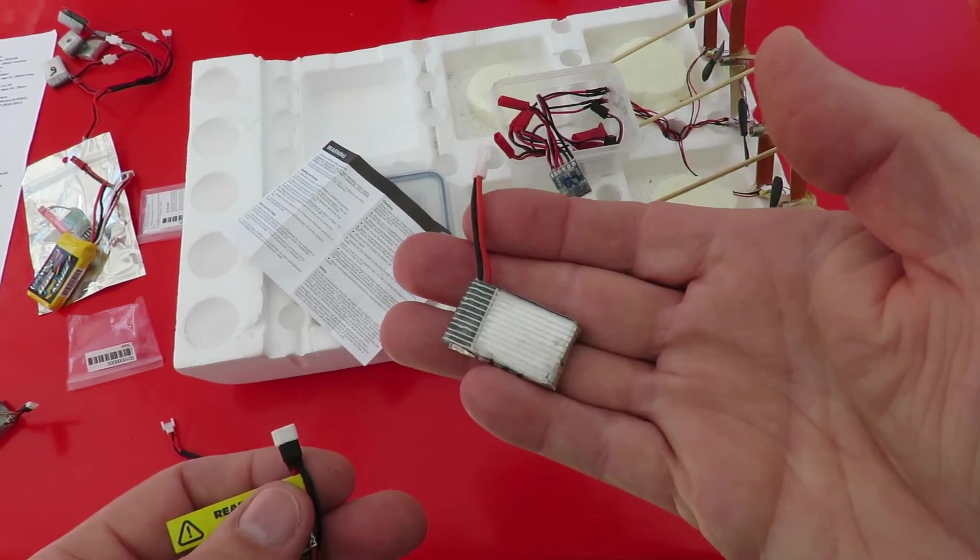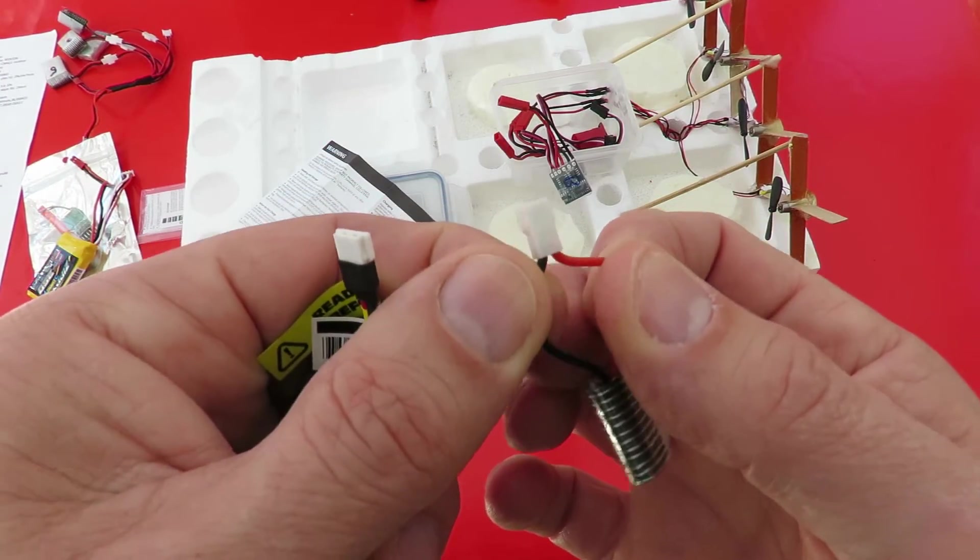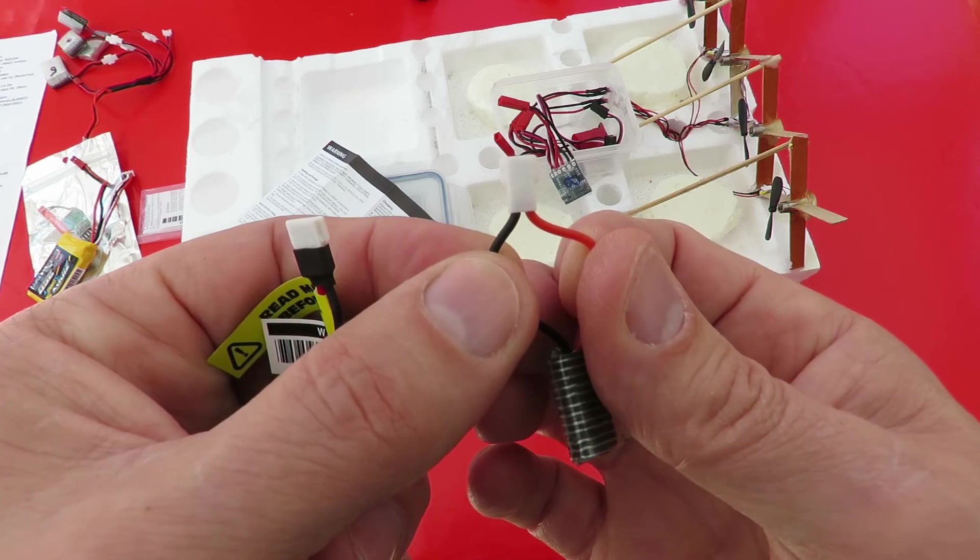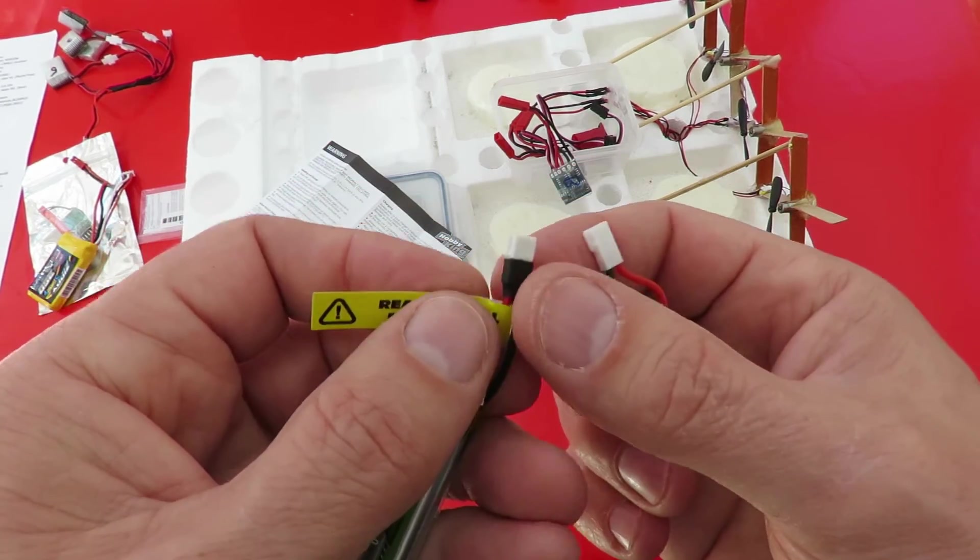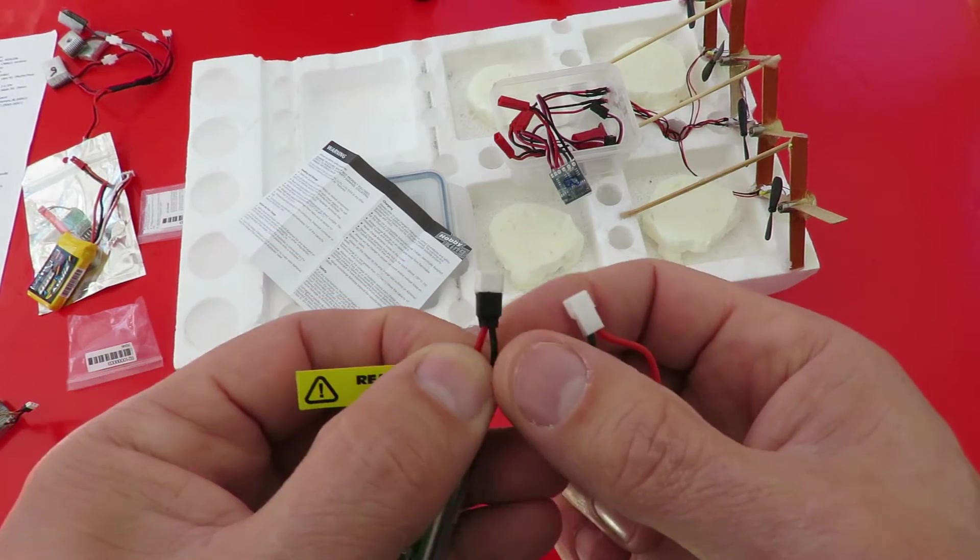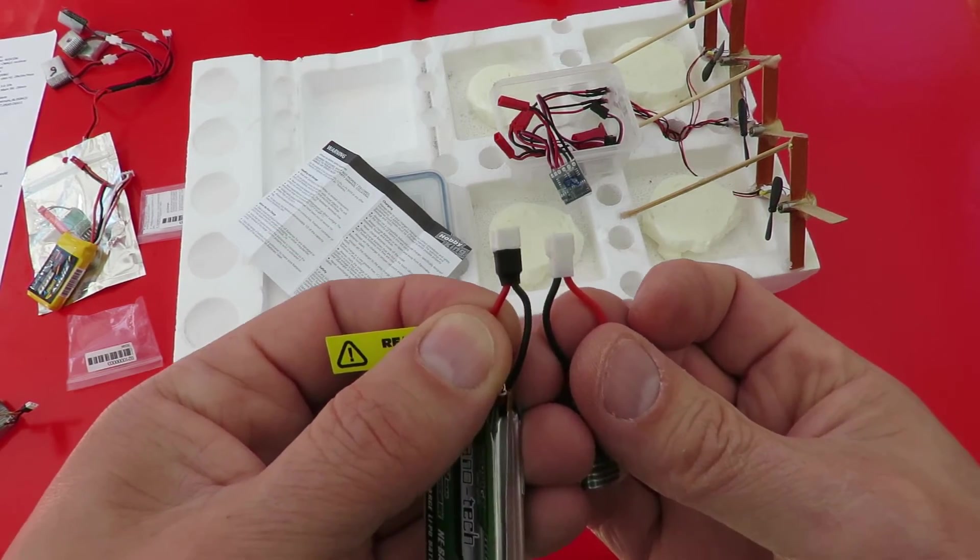These are the batteries I normally use. Holding the plug that way round, we've got positive on the right, negative on the left. These new LiPos, hold the plug the same way round, and the polarity's reversed.